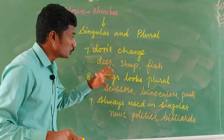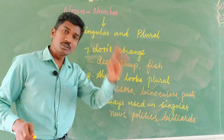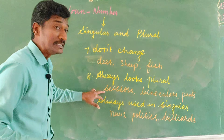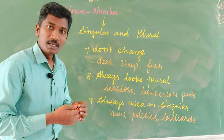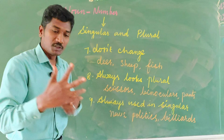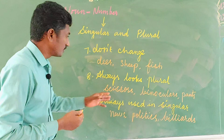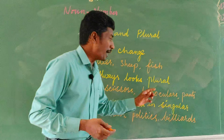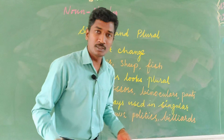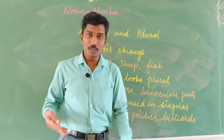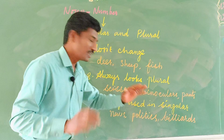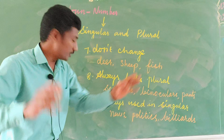Next, some words always look like plural and are used the same in singular and plural — no change. Scissors, because it has two parts; with one part we cannot cut. Binoculars also — it is not singular, it is both. Pants — nobody wears only one side; it is both sides. So they always go in plural.